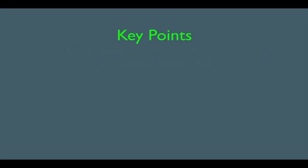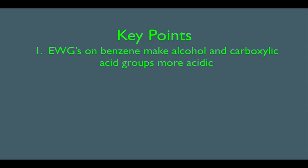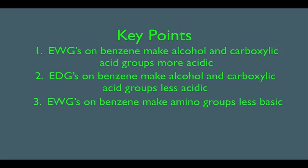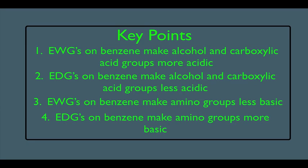In this online lecture, we're going to talk about how substituents affect the acidity, or pKa, of benzene molecules. Key point number one: electron withdrawing groups on benzene make alcohol and carboxylic acid groups more acidic. Number two: electron donating groups on benzene make alcohol and carboxylic acid groups less acidic. Number three: electron withdrawing groups on benzene make amino groups less basic. And number four: electron donating groups on benzene make amino groups more basic.